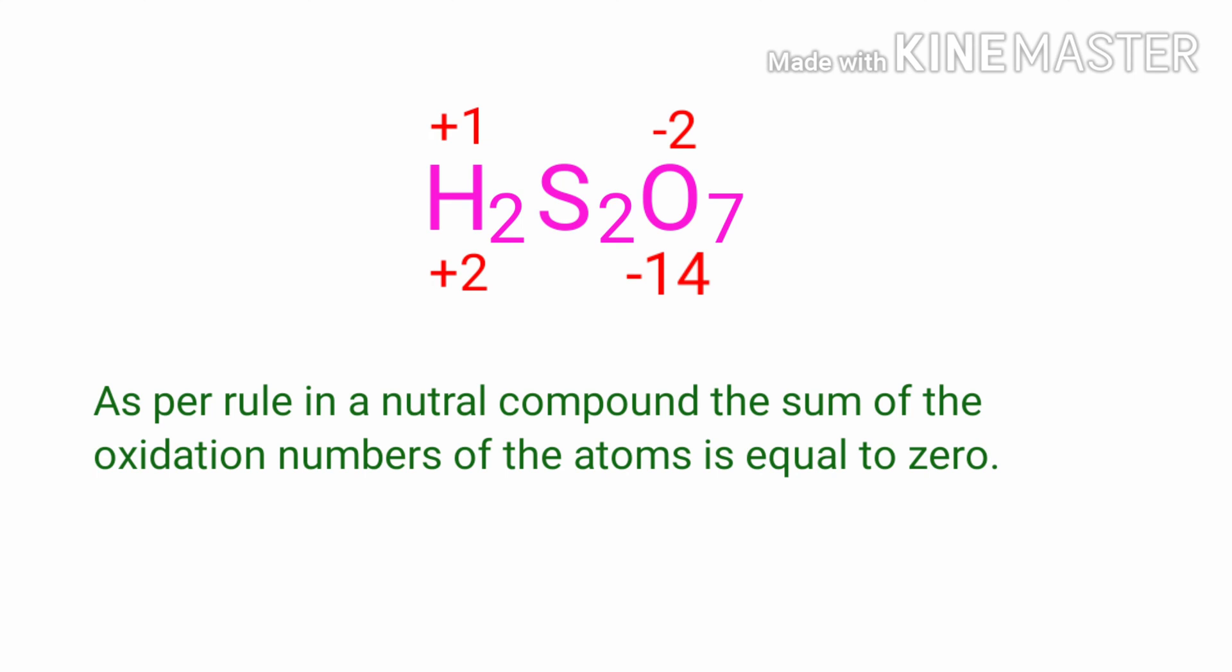So the number under S2 must be plus twelve. In the S2 element, there are two sulfur atoms present. So we can write the oxidation number of sulfur is plus six.